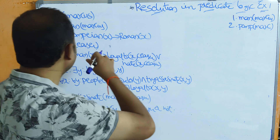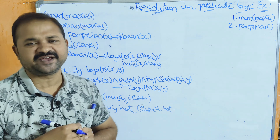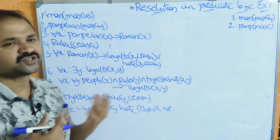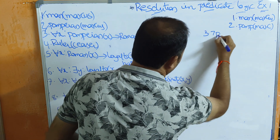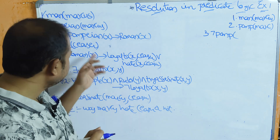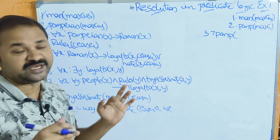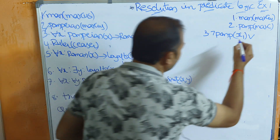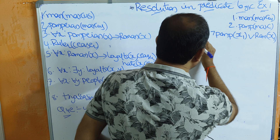The third statement is: for all x, pompeian(x) implies roman(x). We have a universal quantifier, so we can drop it directly. This is in the form P implies Q, so we write it as negation P or Q, giving us: negation pompeian(x1) or roman(x1). We rename the variable to x1 since other statements also use x, and variables must be unique.